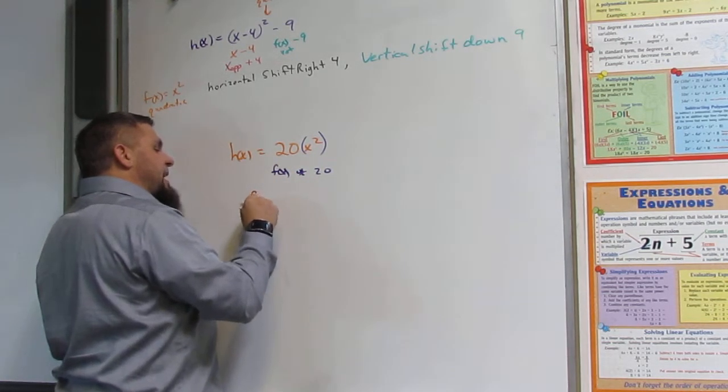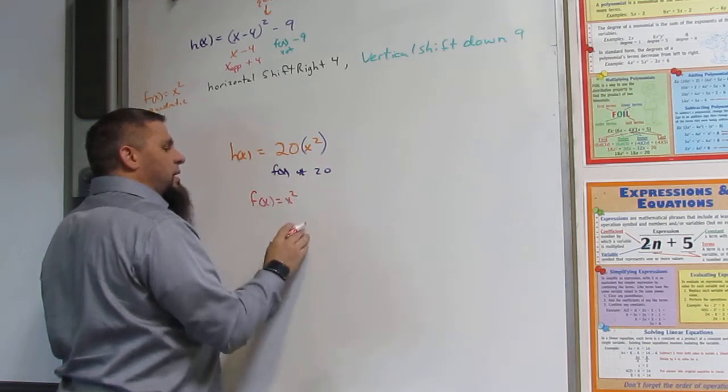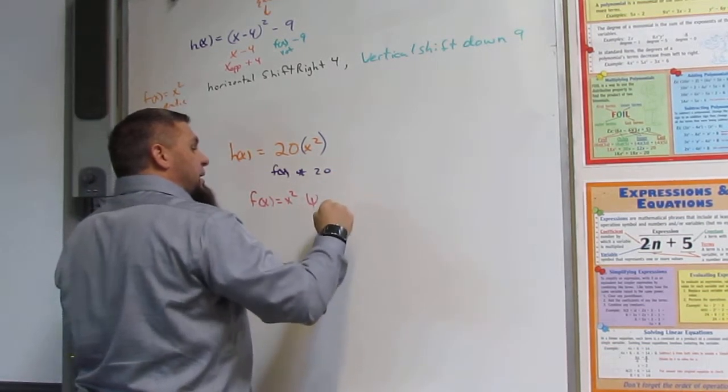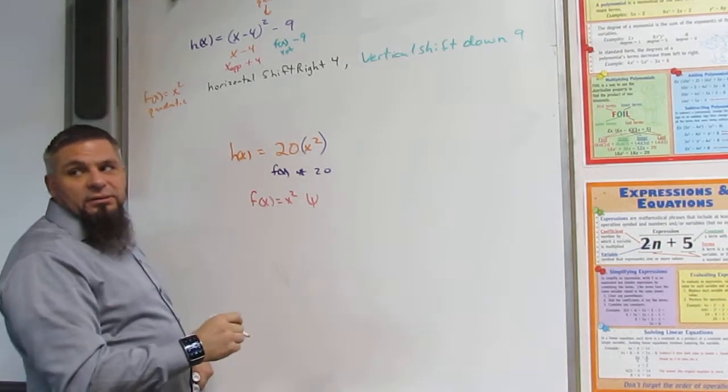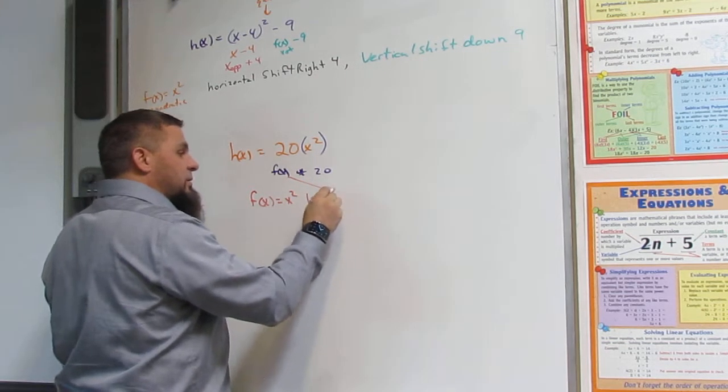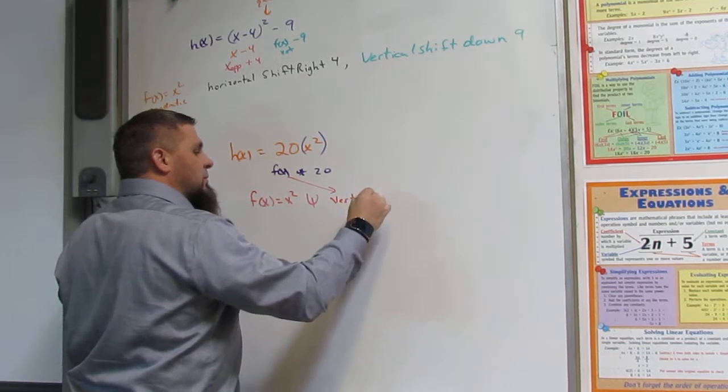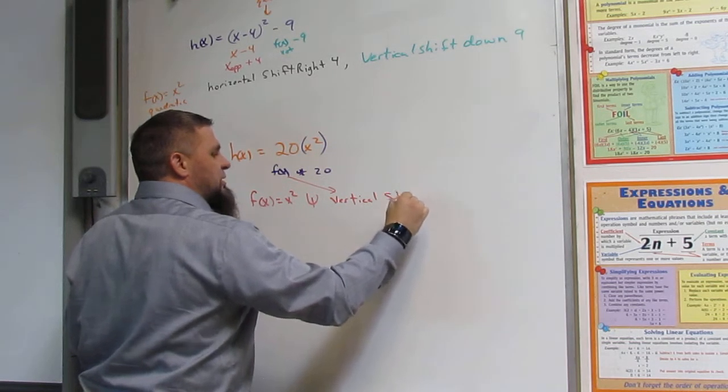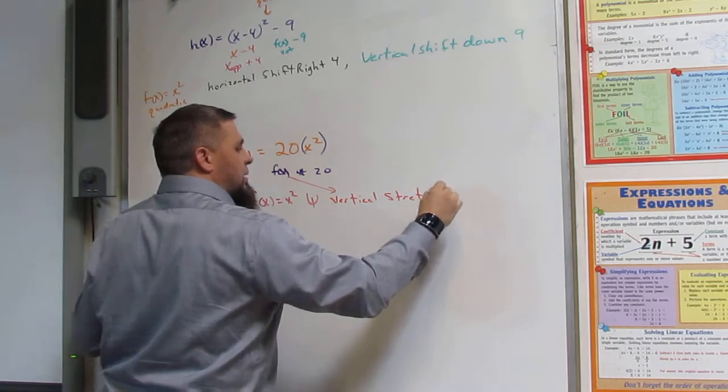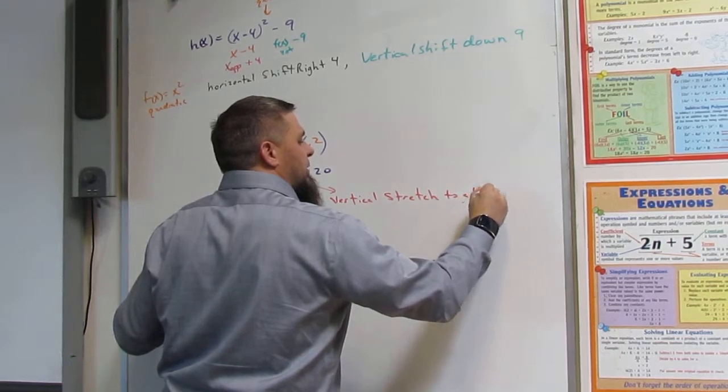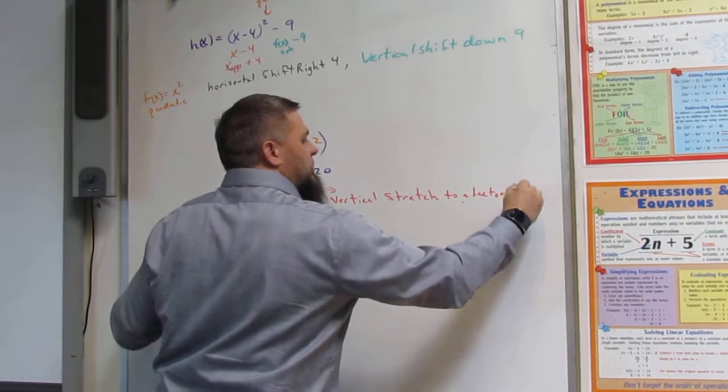So it's going to be f of x is equal to x squared, whereas we do a vertical or horizontal? Vertical. I can't use red. That was a close one. Vertical or horizontal? Vertical stretch times to a factor of 20.